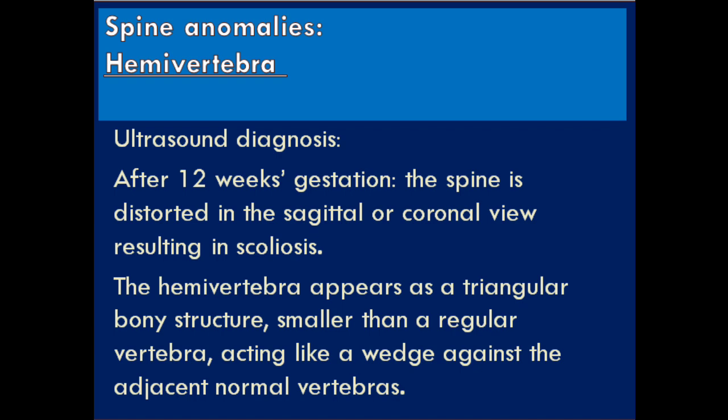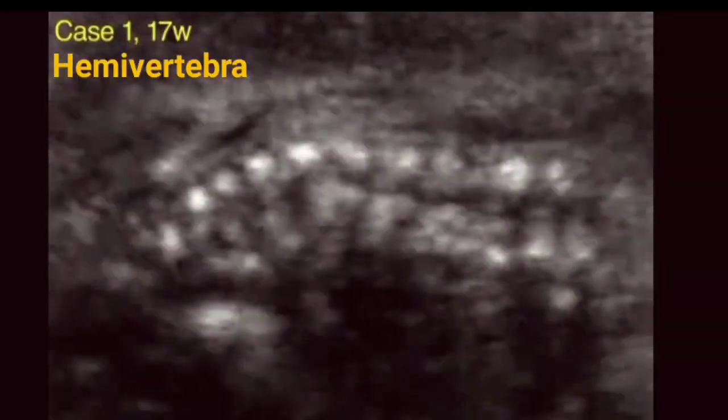Hemivertebra — ultrasound diagnosis. After 12 weeks gestation, the spine is distorted in the sagittal or coronal view, resulting in scoliosis. The hemivertebra appears as a triangular bone structure smaller than a regular vertebra, acting like a wedge against the adjacent normal vertebras.